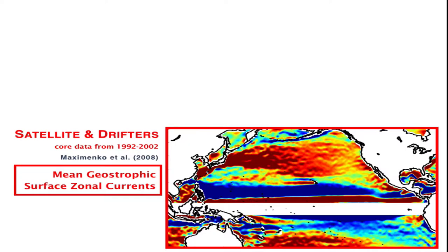A little bit of background. This is a map of the mean geostrophic surface zonal currents obtained by combining satellite and drifter observations between 1992-2002. This type of data has been used by Maxime Encoita in 2008 to show that the mean or time-average circulation is noisy and characterized by jet-like features or striations that are apparent also in this picture.